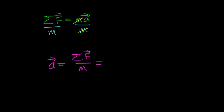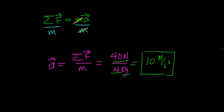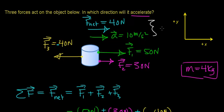The net force acting on this object in the positive x direction was 40 Newtons, and we divide that by the mass of 4 kilograms. 40 divided by 4 is 10, and a Newton divided by a kilogram gives units of meters per second squared. So this object's acceleration, when a net force of 40 Newtons is applied, is 10 meters per second squared. The object accelerates in the positive x direction at 10 m/s². Notice that the net force and the acceleration are in the same direction — that's exactly what Newton's Second Law says.